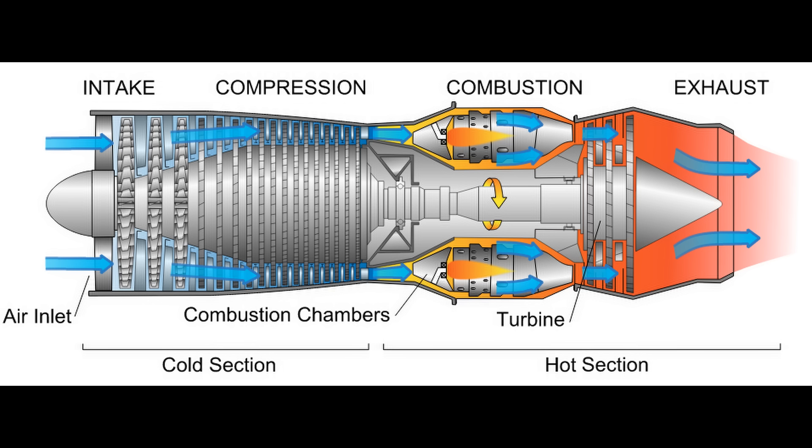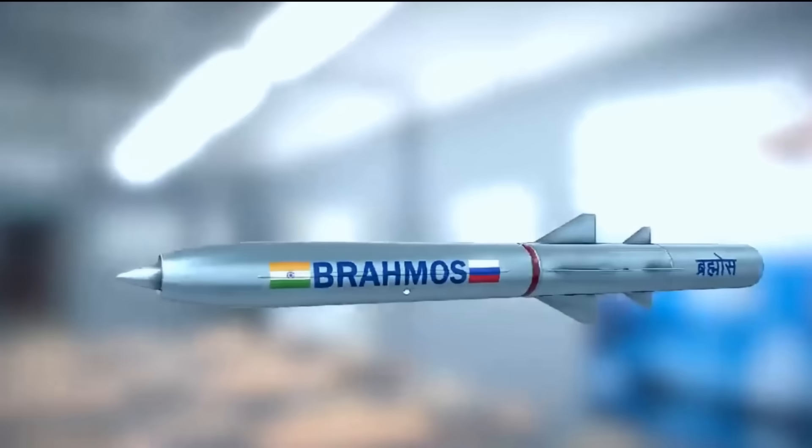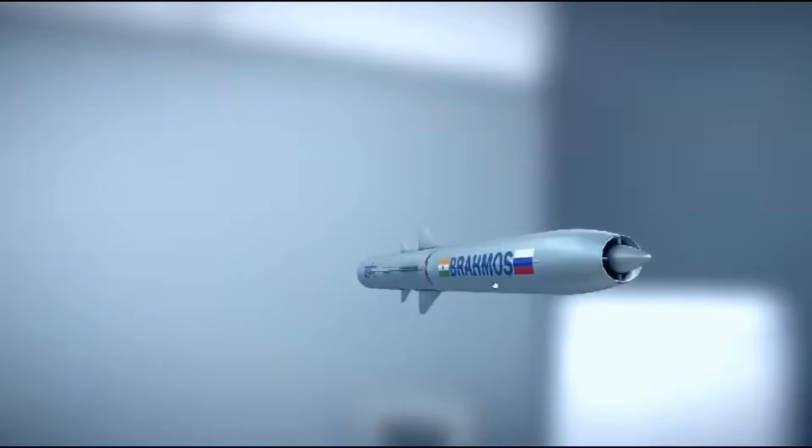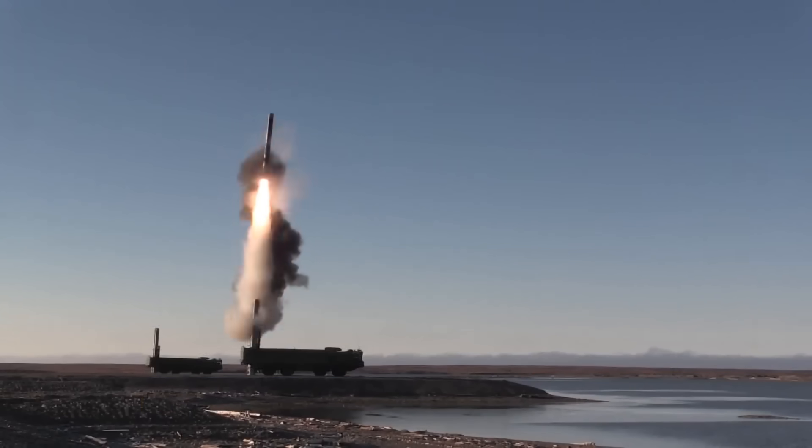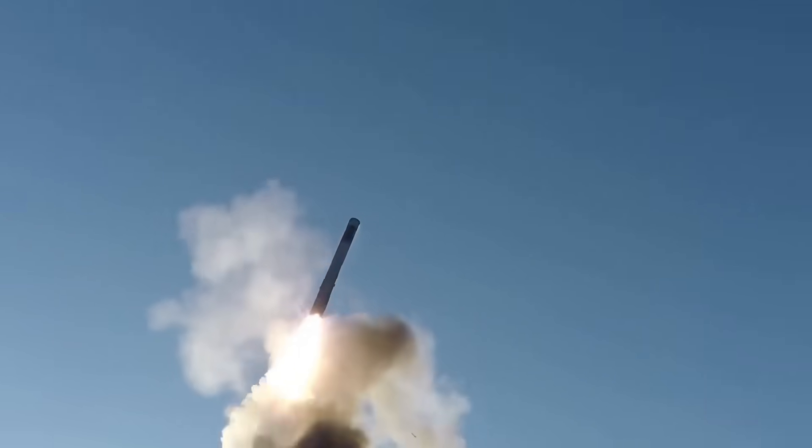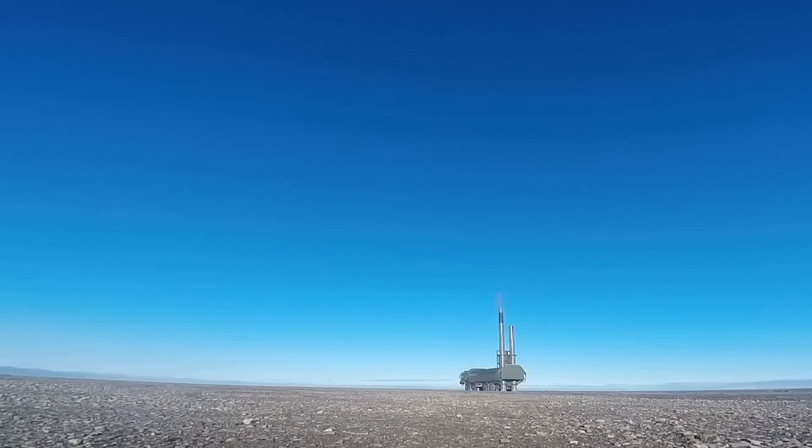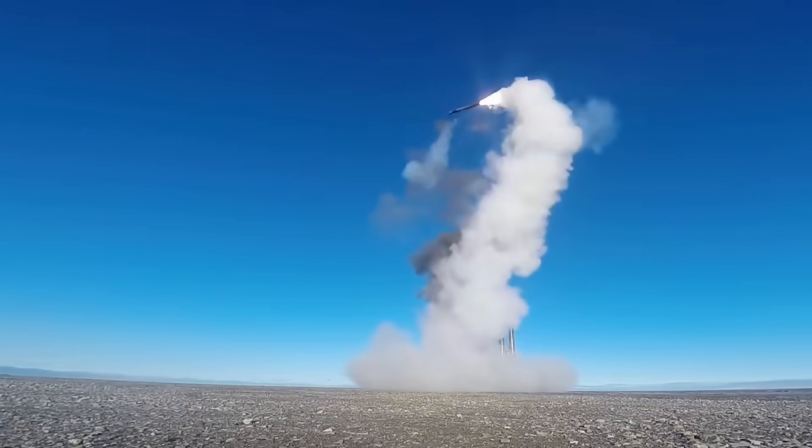Standard jet engines have a speed limit. The BrahMos missile uses a special type of engine called a ramjet to reach its Mach 3 speed. However, a ramjet only works at supersonic speeds, so booster rockets are needed to get the missile to supersonic speed first. Even a ramjet cannot achieve hypersonic speeds.